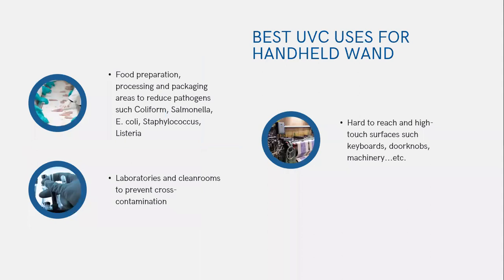Here are some great examples of where UVC handheld wands are being used. In food preparation, processing, and packaging, they're used to reduce pathogens such as coliform, salmonella, E. coli, staphylococcus, and listeria. In laboratories and clean rooms, they're used to prevent cross-contamination. These wands are on demand — you can easily plug them in with very limited PPE and a little education on safe use, and you can be decontaminating an area very quickly. They're also great on hard-to-reach and high-touch surfaces such as keyboards, doorknobs, and machinery like looms or printing presses. This gives your team control in the field and peace of mind, allowing them to decontaminate between breaks, shift changes, or whenever there is an immediate need.